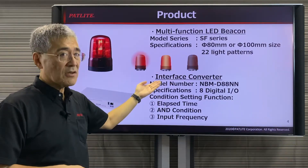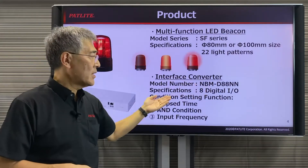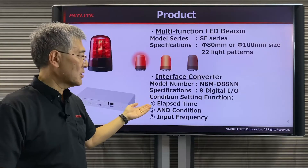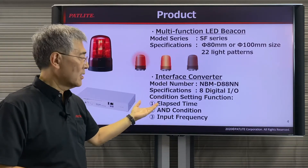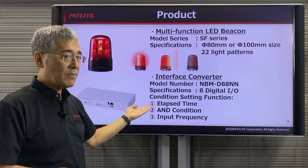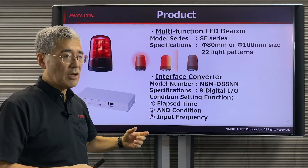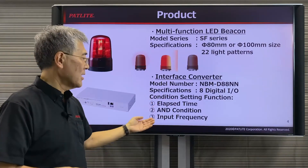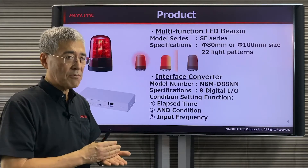The interface converter is the NBM D88NN. It has 8 digital inputs and outputs and has a condition setting function. With this function, you could set triggers based on elapsed time. This AND condition allows you to have multiple inputs before a trigger happens, and the input frequency depends on how often something happens.